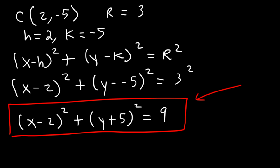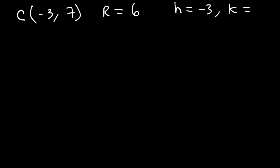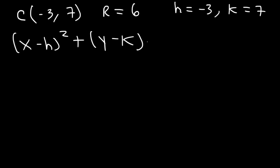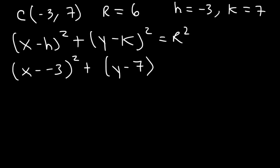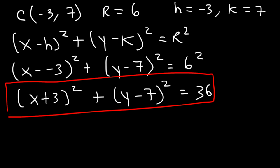Let's try another example. The center is (negative 3, 7) and the radius is 6. We can see that h is negative 3 and k is positive 7. Using the standard equation x minus h squared plus y minus k squared equals r squared, since h is negative 3 this becomes (x plus 3) squared, and k is 7 so it's (y minus 7) squared, equals 6 squared which is 36. So the equation of the circle in standard form is (x plus 3) squared plus (y minus 7) squared equals 36.